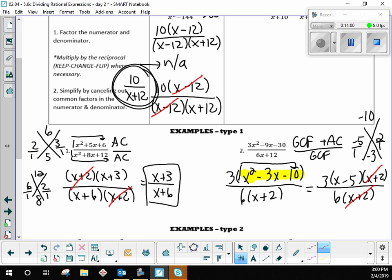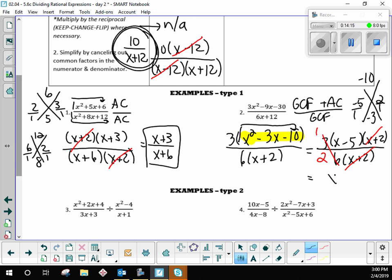And these obviously cancel, but there's one other thing I can simplify. The 3 over 6 becomes 1 over 2. So the final answer is x minus 5 over 2. Those of you who got through number 2, did you get that answer? Did you get close to that answer? Yes, yes.